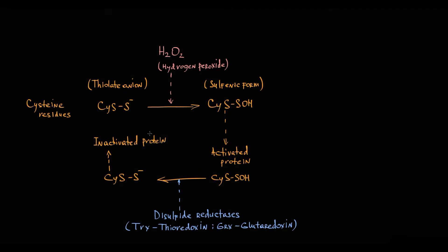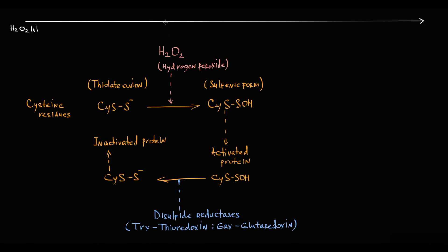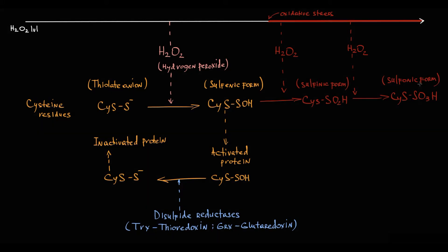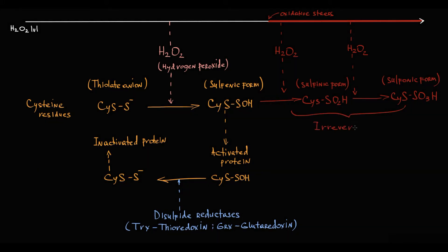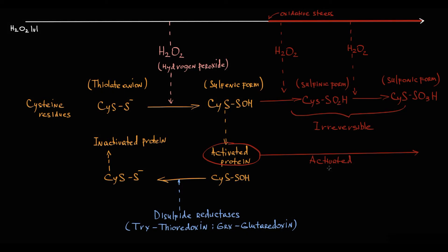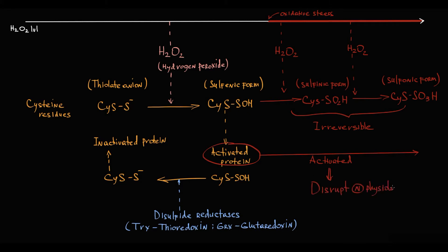The problem in redox signaling is that oxidation of thiolate anions to sulfenic form is only possible with small concentrations of hydrogen peroxide. If oxidative stress occurs, the level of hydrogen peroxide increases, and the sulfenic form can be oxidized further to sulfinic or sulfonic form. The crucial concept here is that unlike sulfenic modification, sulfinic and sulfonic modifications are irreversible. Once a protein is activated, it remains in the activated state and cannot be inactivated. Such modifications cause permanent protein damage, totally disrupting normal cell physiology. This condition — where oxidative stress causes permanent alterations in protein structure and loss of function — is called redox imbalance.